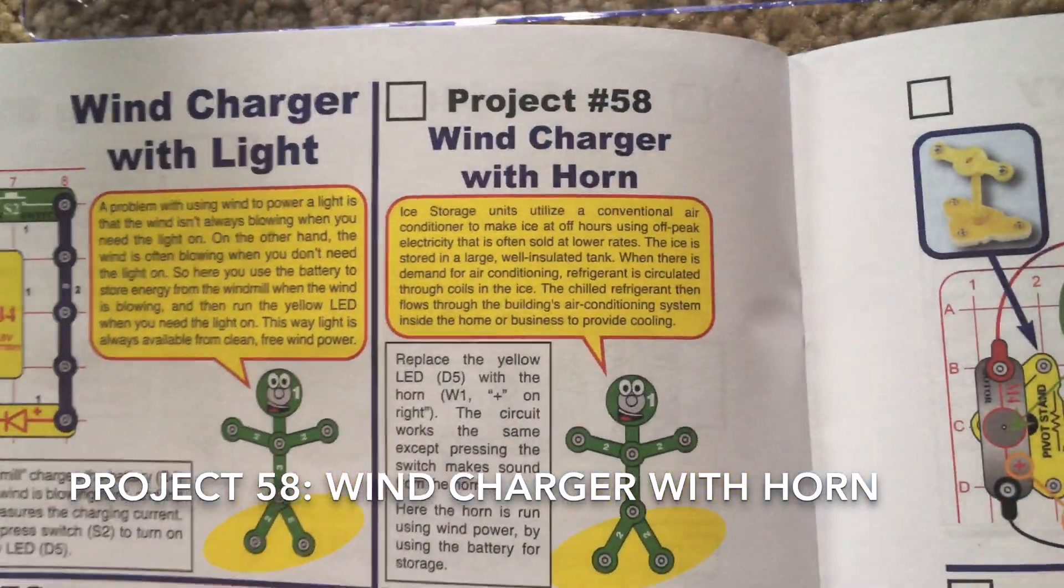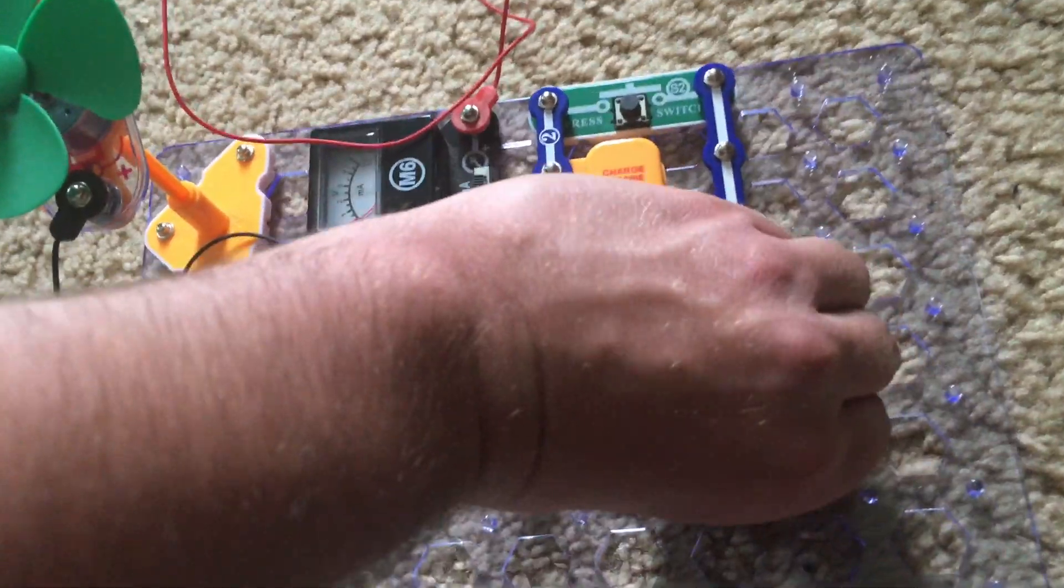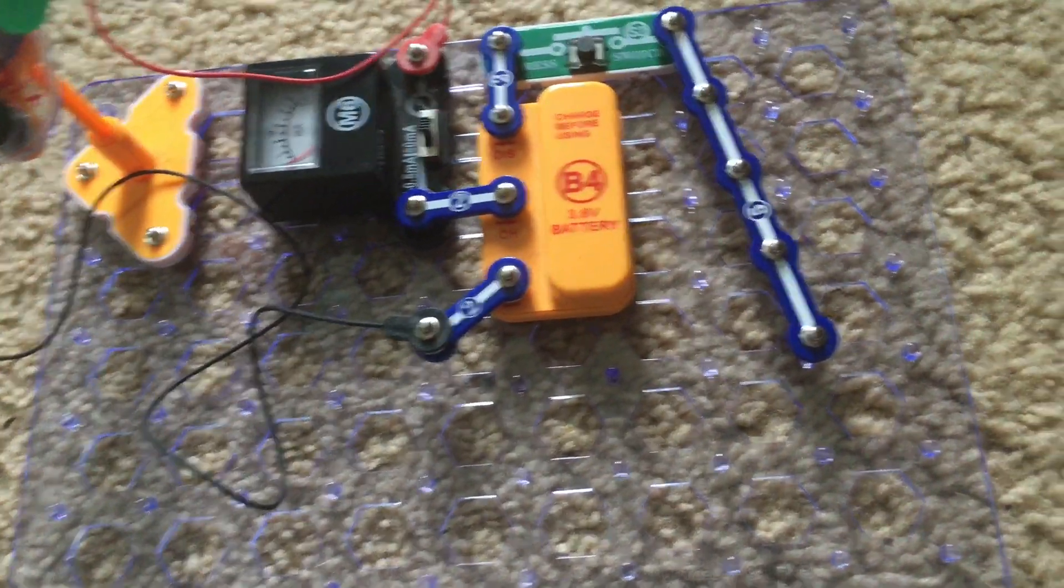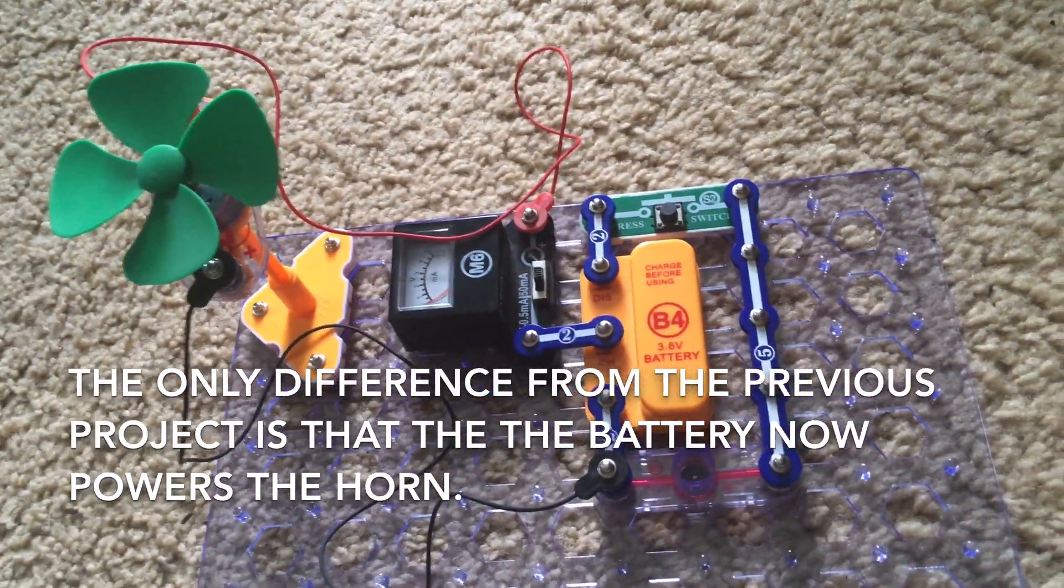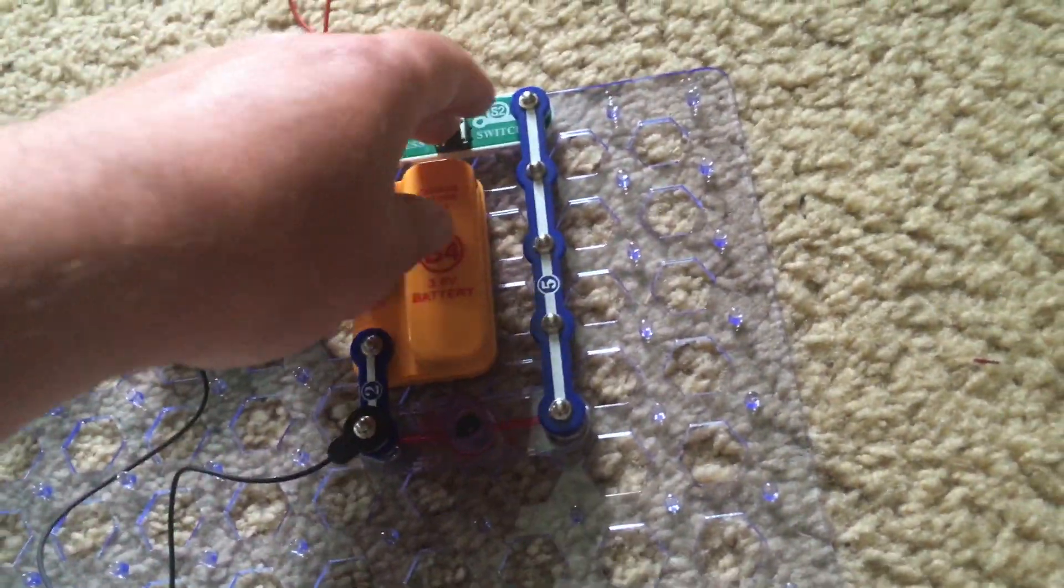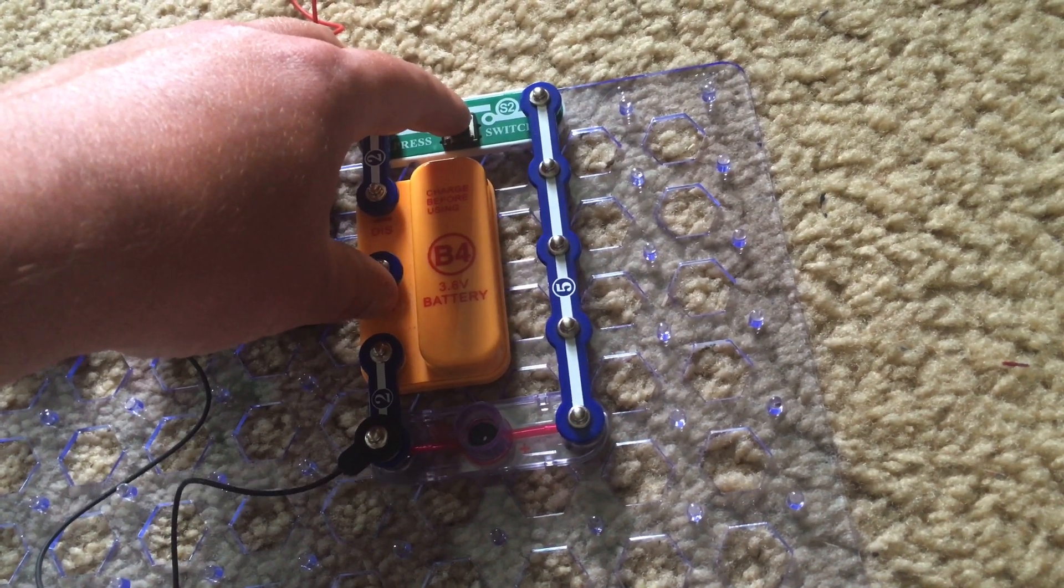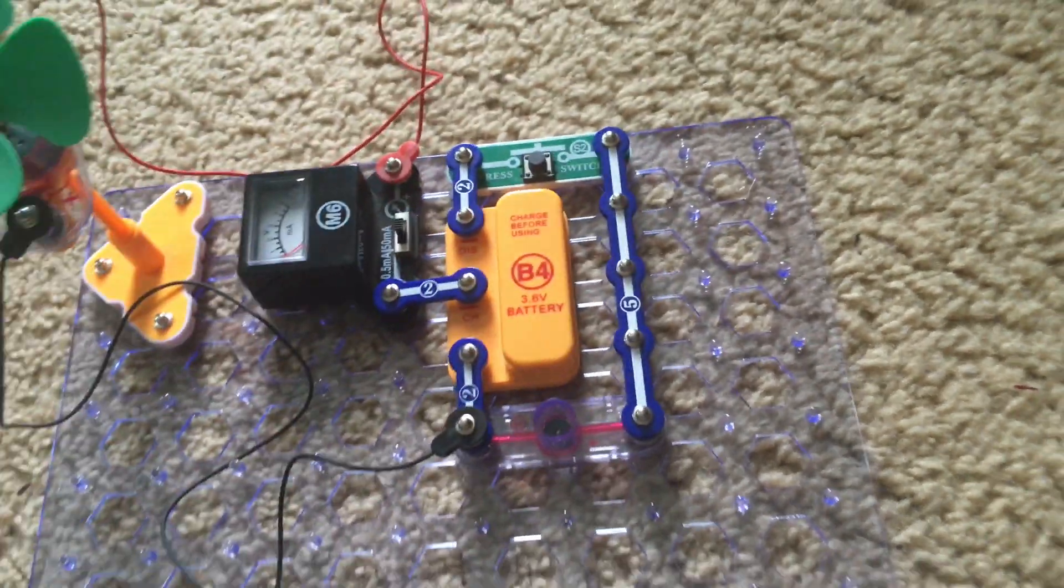And then for project 58, you would simply replace the LED with the horn. And now the wind will charge the battery for the horn. I'm going to just quickly put it on. Please lower your volume. And there you have it.